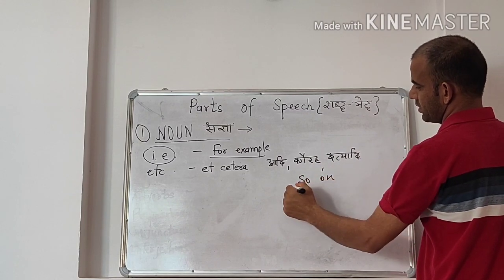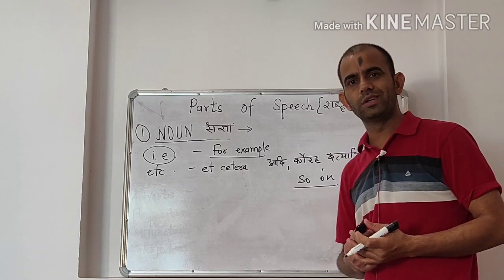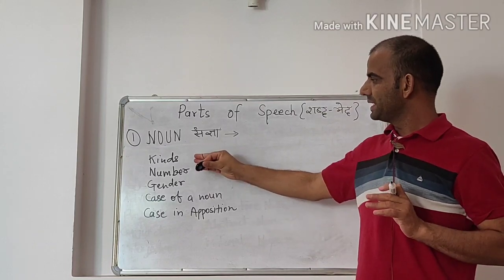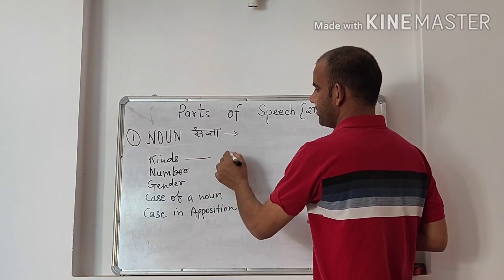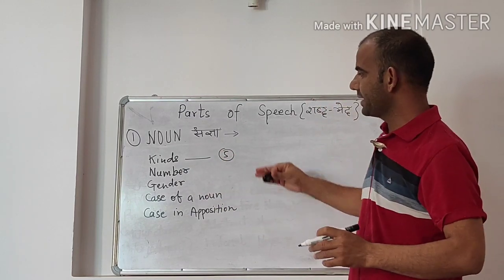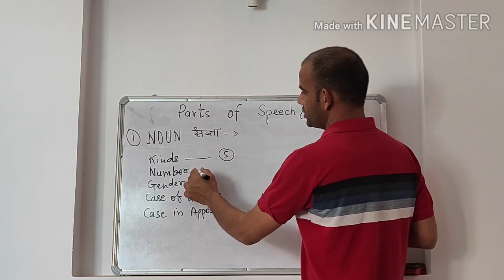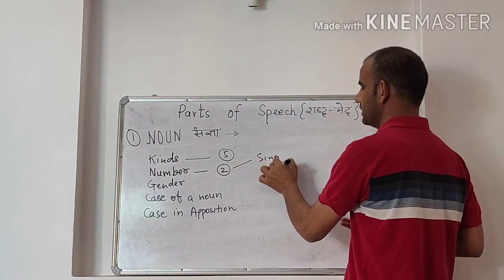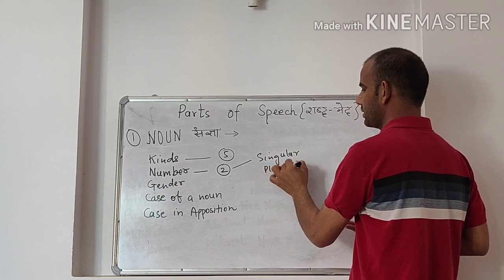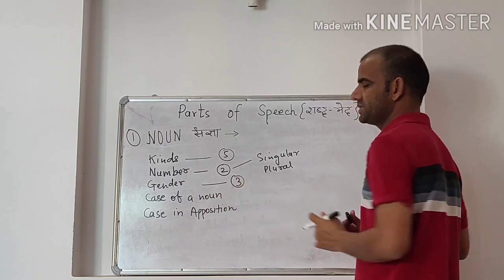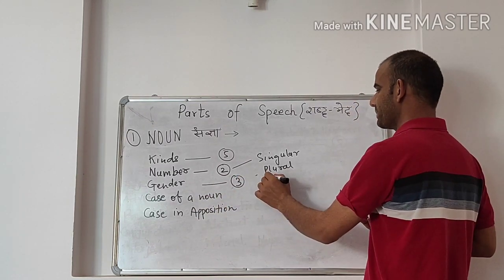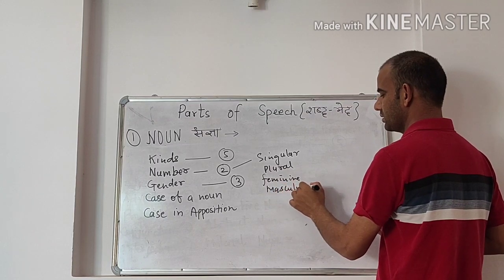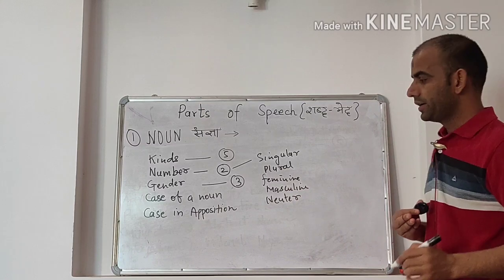So these are very common using words. In the noun section we will study these following five types. First of all we will discuss about the kinds of noun and there are five kinds of noun. Then we will discuss about singular and plural, thereafter we will talk about gender.